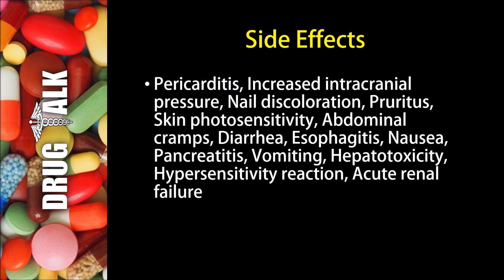As with all medications, there are some side effects or adverse reactions that patients may experience while using tetracycline. Some patients may experience pericarditis, increased intracranial pressure, or nail discoloration. Pruritus or itchiness of the skin is a possibility, as well as skin photosensitivity. Some patients may experience abdominal cramps, diarrhea, esophagitis, or nausea. Pancreatitis and vomiting may occur. Hepatotoxicity or a hypersensitivity reaction is a possibility, as well as acute renal or kidney failure.